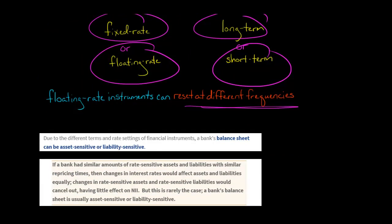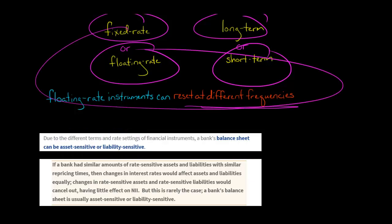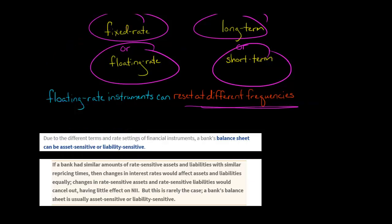The first thing you want to know is does the bank have an asset sensitive balance sheet or does it have a liability sensitive balance sheet. If we didn't have any of these differences — no resetting at different frequencies, no fixed rate or floating rate distinctions — if everything was the same on the asset side and the liability side, then an increase of 100 basis points in interest rates would affect both assets and liabilities similarly.